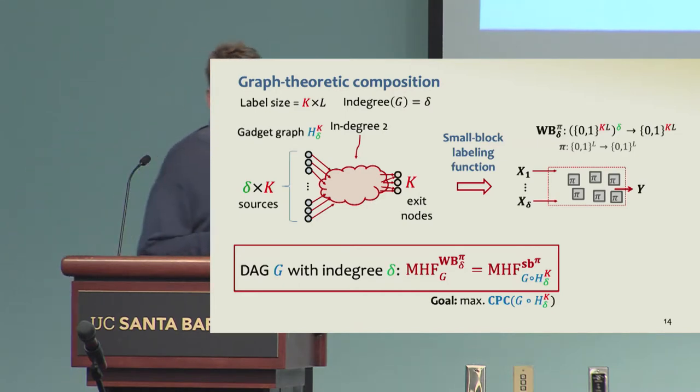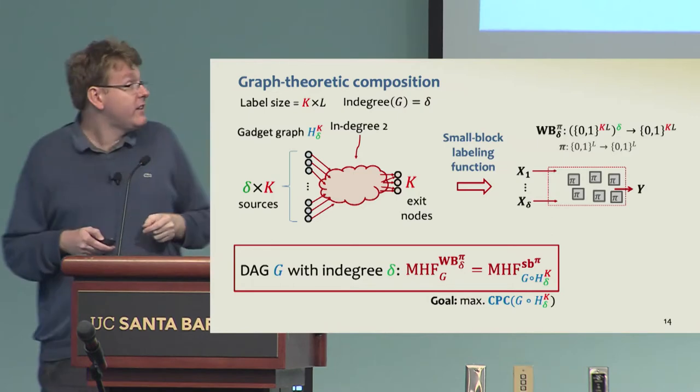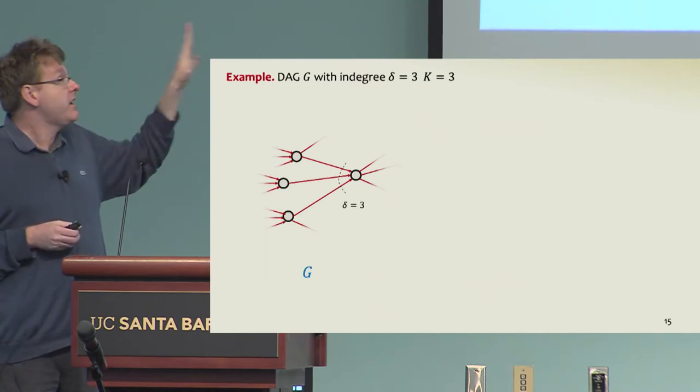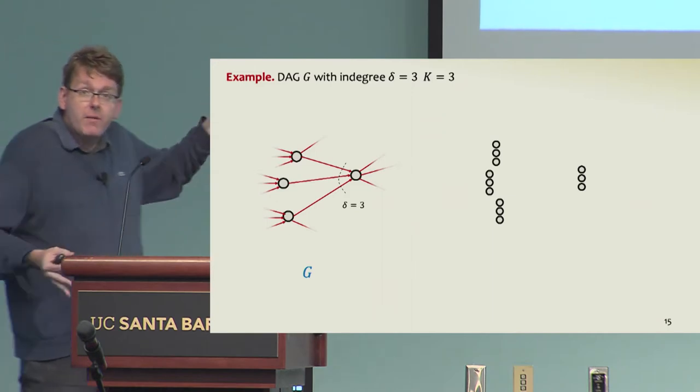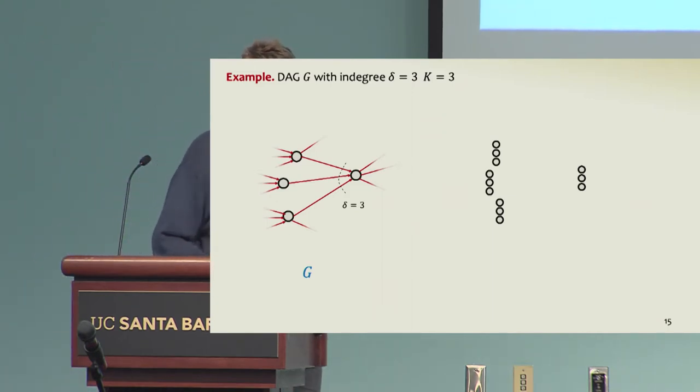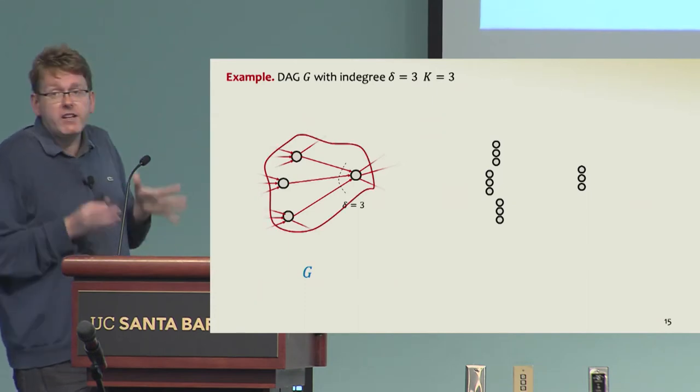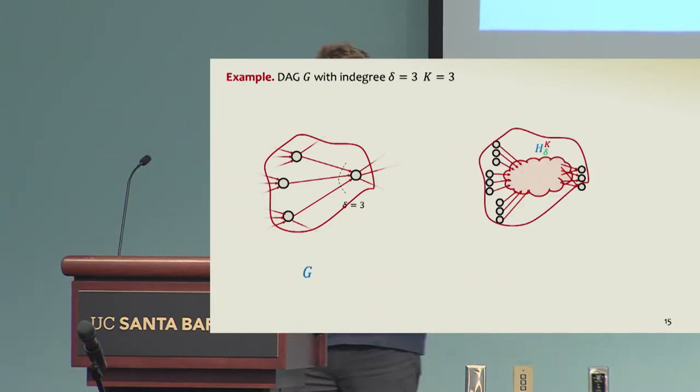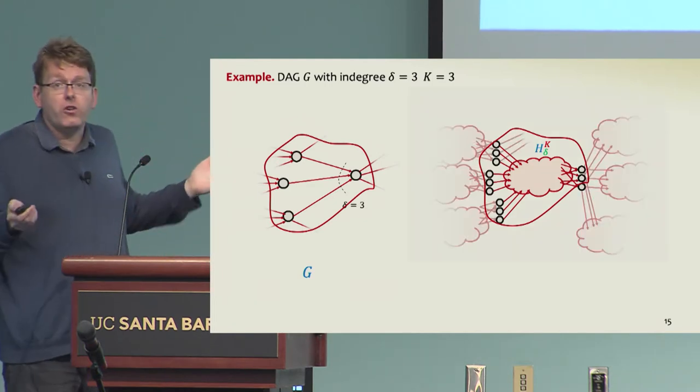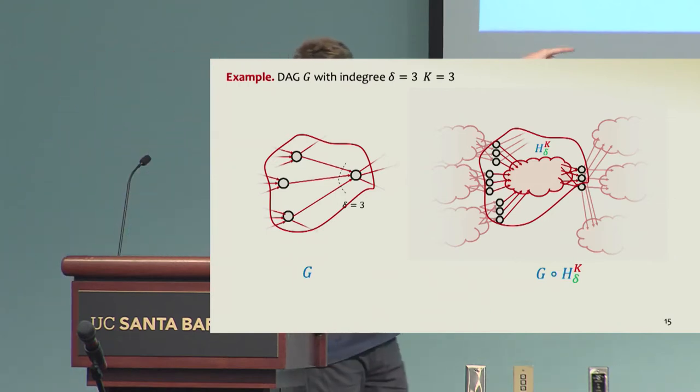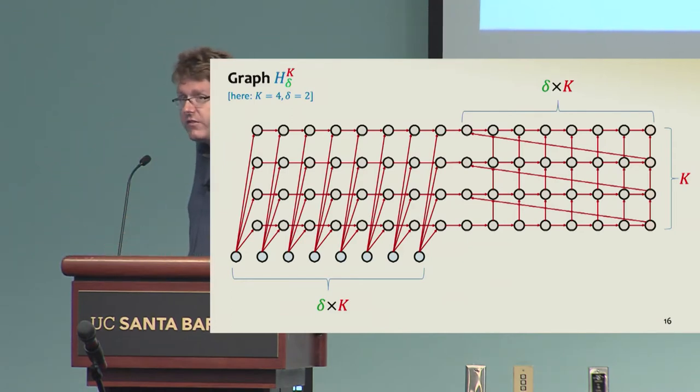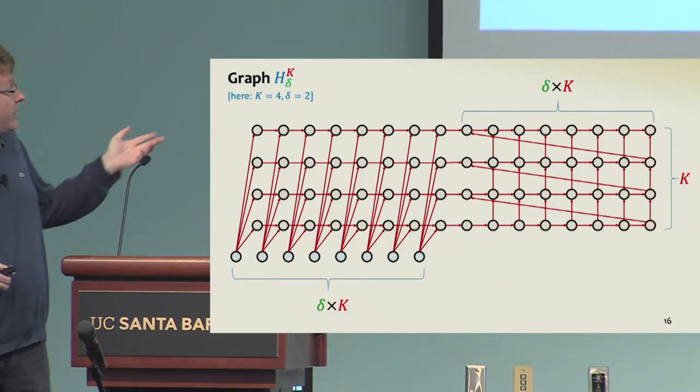The goal is to find such a gadget graph that will maximize the pebbling complexity. The composition is quite natural. We look at our base graph and it has some in-degree, say here 3. What we do is first we blow up every vertex by K, so every vertex is mapped to K vertices. Then for every subgraph which is made by an inner vertex and its predecessors, we map it to an instance of the gadget graph in the composed graph. We do this all over the graph. Now we get a new graph, which is the composed graph, which now has actually also a constant in-degree 2.